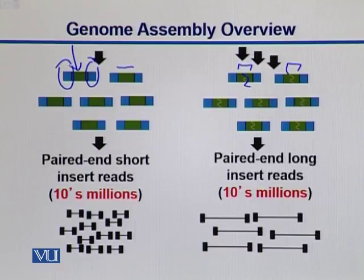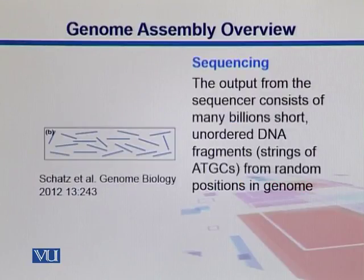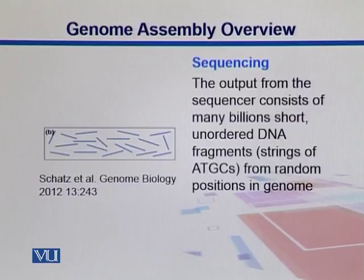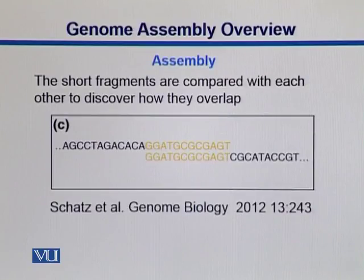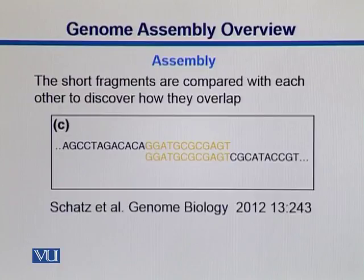Sequencers produce tens of millions of reads on both sides. The output from the sequencer consists of many billion short, unordered DNA fragment reads. What we do to them is we can put them together — we can align those reads. Those fragments are aligned and we see their ends are overlapping. In this way we can have overlaps between these reads and put them together based upon these overlaps and assemble those contigs.